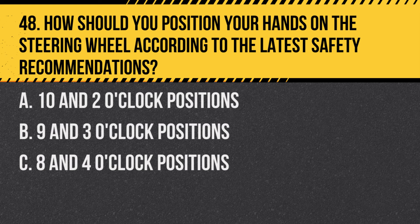Question 48: How should you position your hands on the steering wheel according to the latest safety recommendations? A. 10 and 2 o'clock positions. B. 9 and 3 o'clock positions. C. 8 and 4 o'clock positions. Answer: B. 9 and 3 o'clock positions. The latest safety recommendations advise positioning your hands at the 9 and 3 o'clock positions on the steering wheel.